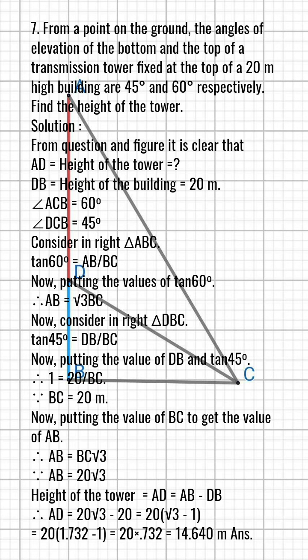Now consider right triangle DBC. Tan 45 equals DB over BC. Putting the value of DB and tan 45: 1 equals 20 over BC, therefore BC equals 20m.